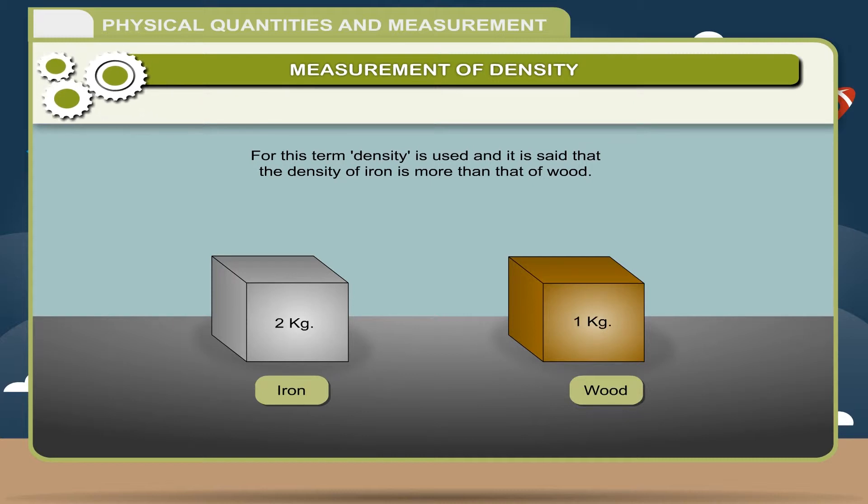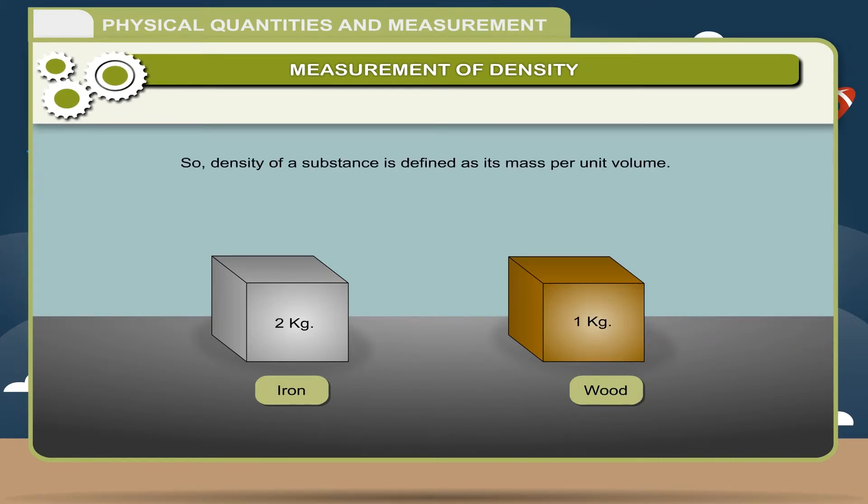It is said that the density of iron is more than that of wood. Thus, heaviness or lightness of any substance is compared by taking the same volume of each. Iron will have more mass if we take a cube of iron and another cube of wood of equal volume. So, density of a substance is defined as its mass per unit volume.